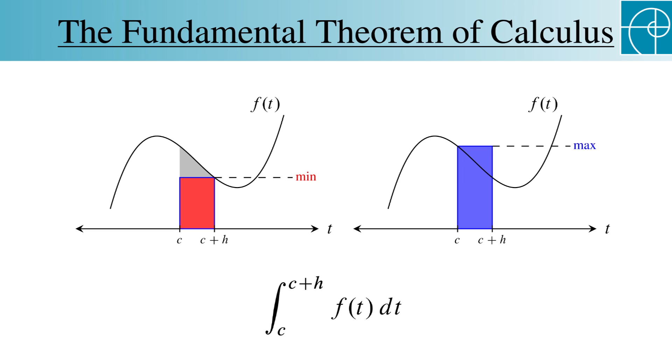Likewise, this is the upper sum, and the height of this rectangle is the maximum value. So the gray area is somewhere between the areas of these two rectangles.